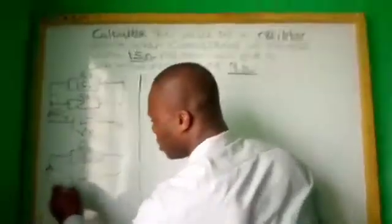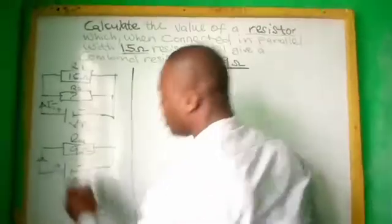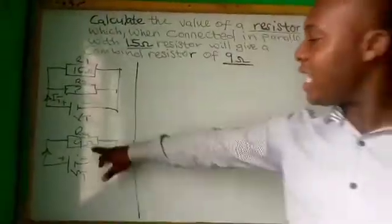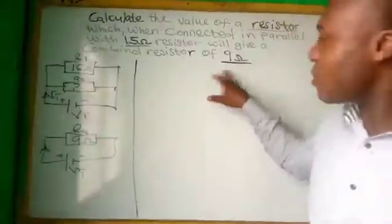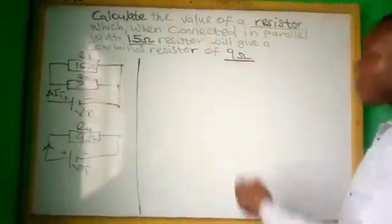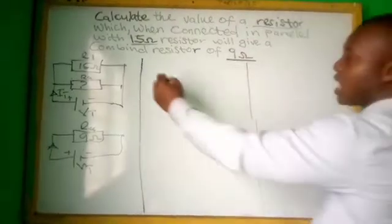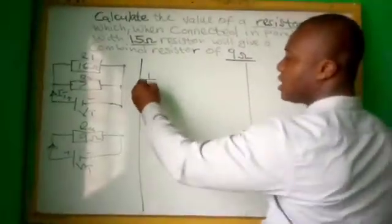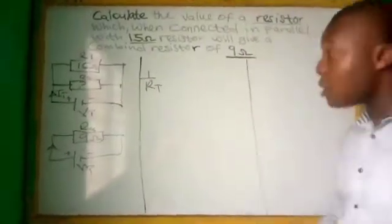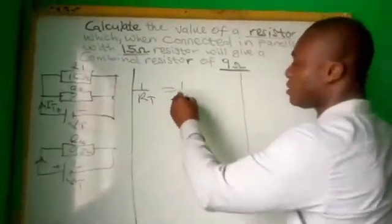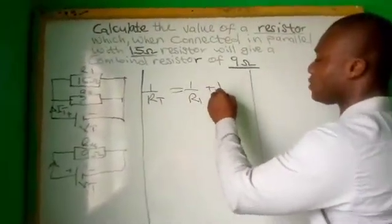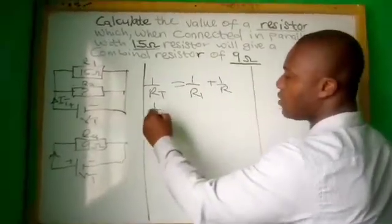What you do is look at this question very well. They said they have the answer as 9 ohms, but we don't know R2. So what do you do? You bring the formula of how to find resistors in parallel, which is 1/RT = 1/R1 + 1/R2.